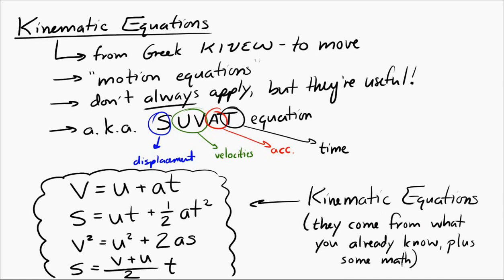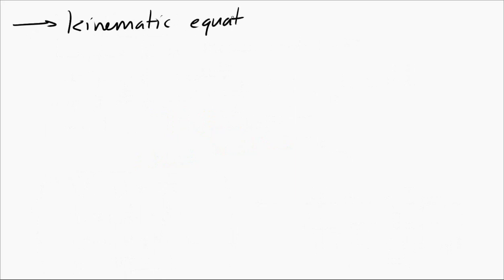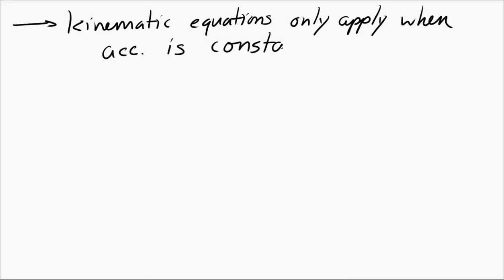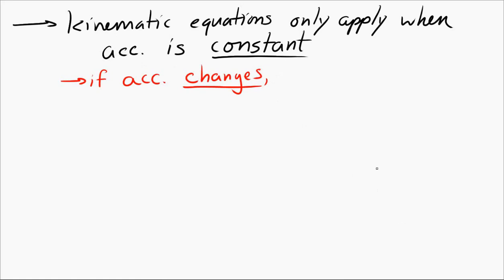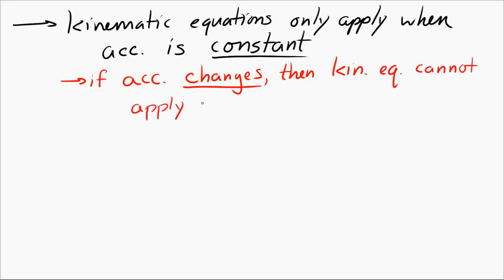There is a big condition that must be met for these equations to work: the acceleration must be constant. The kinematic equations only apply when acceleration is constant. So if your acceleration starts at one meter per second squared to the east and later increases to five meters per second squared to the east, you cannot use the kinematic equations. But if your acceleration is always two meters per second squared to the east, then you can apply them.